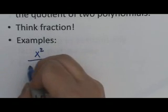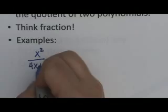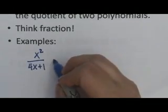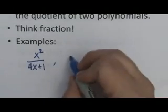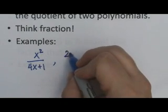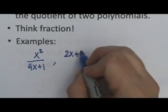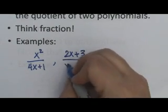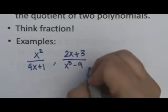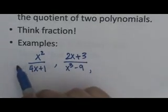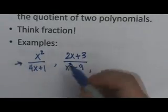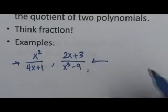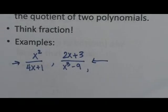Here's some examples of a rational expression. x squared over 4x plus 1 is an example. You could have 2x plus 3 over x cubed minus 9. Notice that we have sort of fraction bars here. Those are rational expressions. They really do look very similar to a fraction.